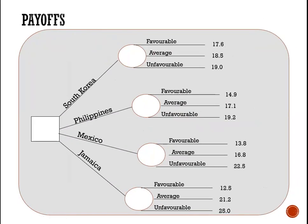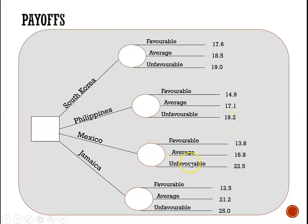Next we add the payoffs. If we choose South Korea and conditions are favorable, the cost will be 17.6 million. Under average conditions the cost will be 18.5 million, and under unfavorable conditions the cost will be 19 million. For Philippines under favorable conditions the cost will be 14.9 million, average conditions 17.1 million, and unfavorable conditions 19.2 million. This shows all the information from the payoff table in the form of a decision tree.